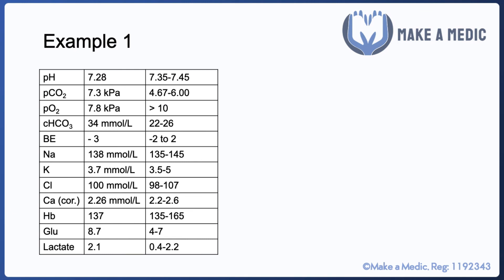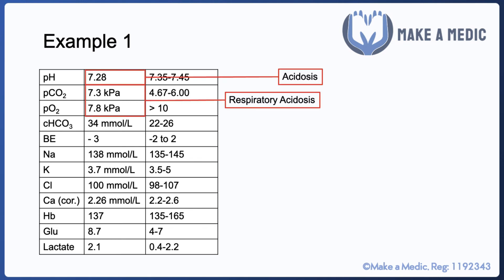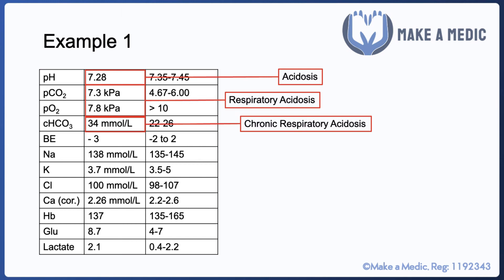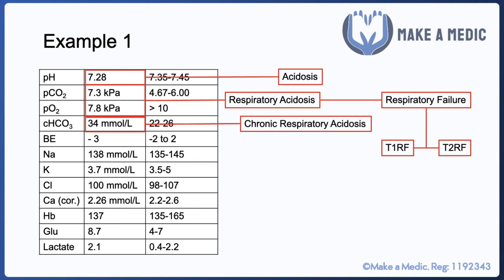Looking at a first example: we can see that the patient is acidotic, and the pCO2 is high — with the patient being acidotic, this immediately tells you this is a respiratory acidosis. The bicarbonate being high suggests this has been a problem for a while; the patient has likely been retaining carbon dioxide for a long time and their kidneys have had time to adjust their bicarbonate reabsorption to compensate for the acidosis.